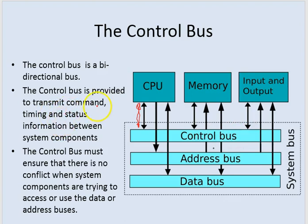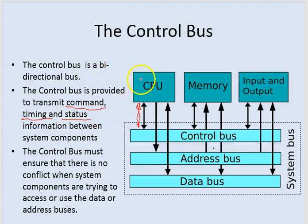The control bus is provided to transmit command information, timing information, and status information — those three areas. The control bus transmits information pertaining to those three areas between system components, such as between the CPU and memory.